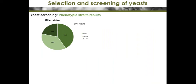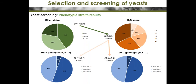Only yeast with killer activity were preselected, because killer activity allows the yeast to compete more successfully in must or in wine — it is a positive oenological characteristic. A first selection of 62 favorable wine yeasts was done by eliminating neutral and sensitive yeasts and those that produced the highest amounts of hydrogen sulfide.